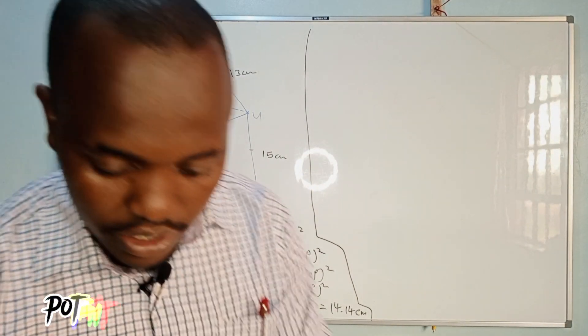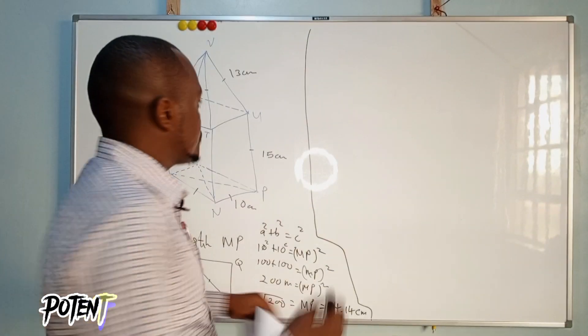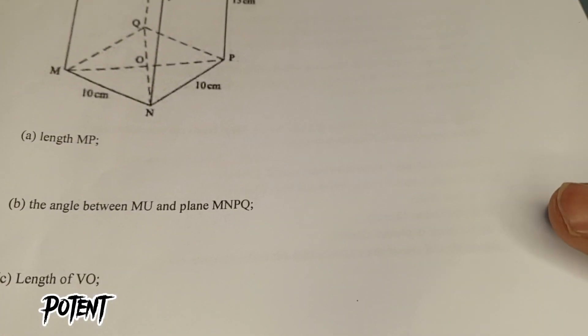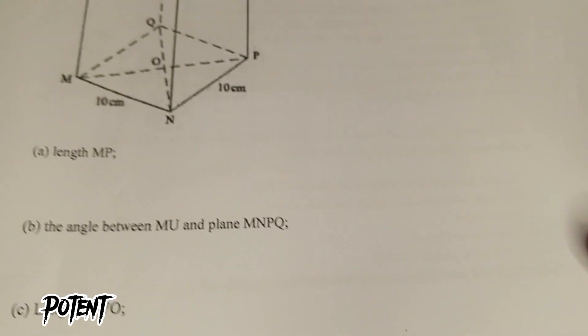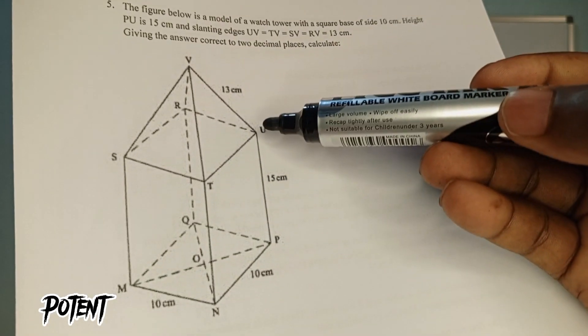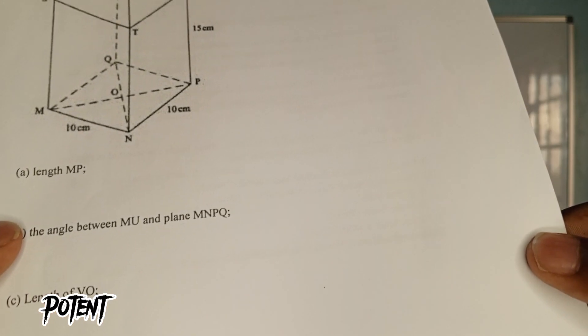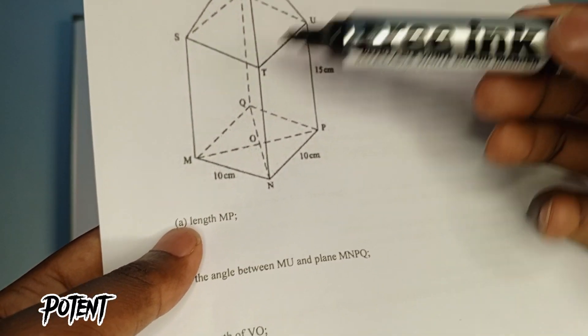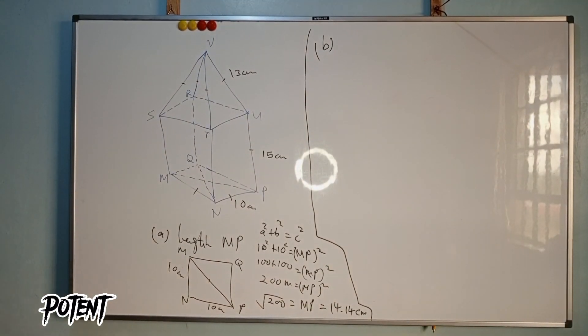Part B asks for the angle between MU and the plane MNPQ. We draw a line MU and need the angle between that line and the plane MNPQ.